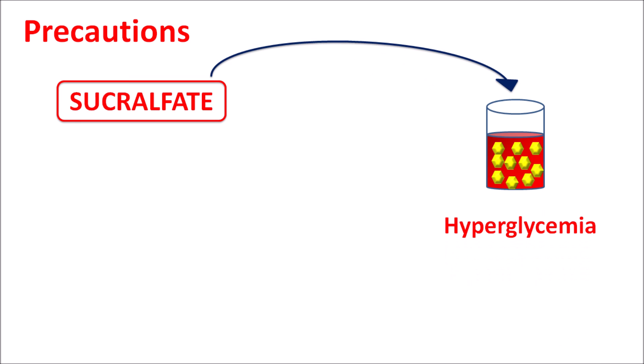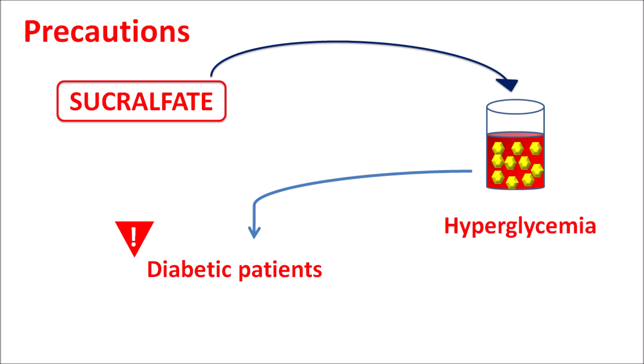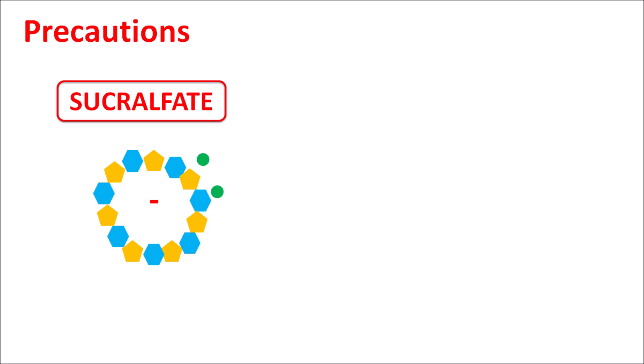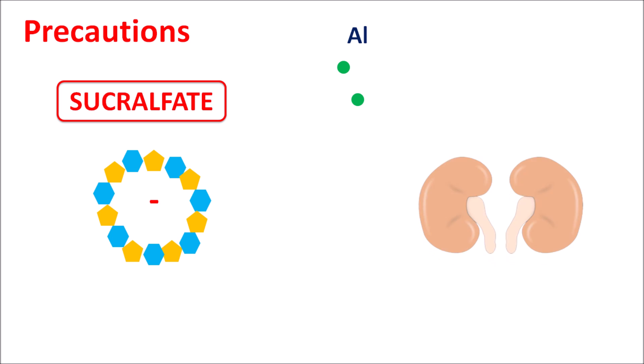What are the precautions of sucralfate? Sucralfate can increase glucose levels, resulting in hyperglycemia, so this drug should be carefully given to diabetic patients. Although sucralfate is not significantly absorbed through the GI tract, the aluminium ions released from sucralfate can be absorbed and are excreted by the renal system.